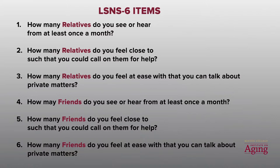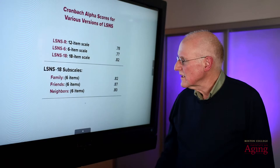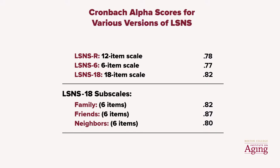The LSNS-6 has a series of three questions for assessing family ties and a comparable set of questions assessing friendships. The lead-in for family items is: considering all the people you are related to by birth, marriage, adoption, and so forth. The lead-in for the friendship items is: considering all the friends, including those who live in your neighborhood. Scores on the LSNS-6 range from 0 to 30, and Cronbach Alpha scores are relatively high, like this Alpha of 0.77.